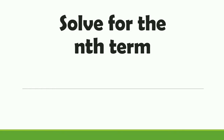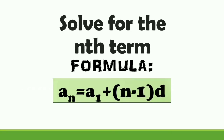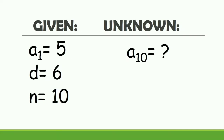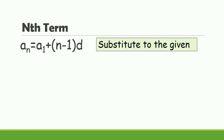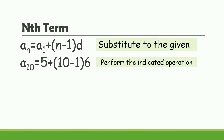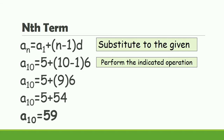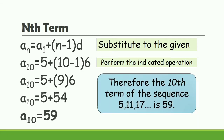Let's proceed and solve for the nth term using the formula a sub n is equal to a sub 1 plus n minus 1 times d. Given: a sub 1 is equal to 5, d is equal to 6, n is equal to 10, and a sub 10 is the unknown. Substituting: a sub 10 is equal to 5 plus 10 minus 1 times 6. Performing the operations: 10 minus 1 is 9; 9 times 6 is 54; 5 plus 54 is 59. Therefore, the 10th term of the sequence 5, 11, 17 is 59.